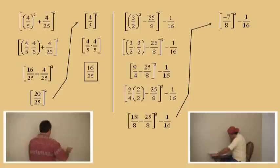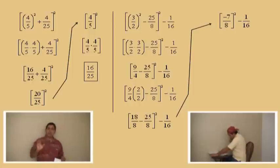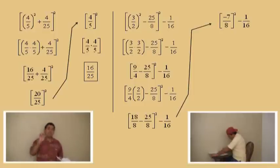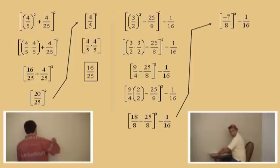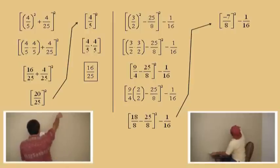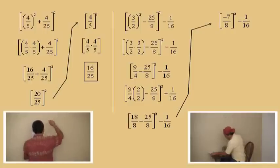18 over 8 subtract 25 over 8. The denominators are the same, so now: 25 subtract 18 is 7, so 18 subtract 25 is negative 7. What is 18 over 8 subtract 25 over 8? Negative 7 over 8. So we have negative 7 eighths squared, subtract 1 sixteenth. What does negative 7 eighths quantity squared mean? Negative 7 eighths times negative 7 eighths.